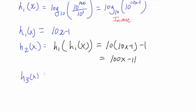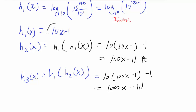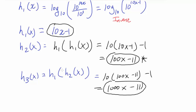Now let's find h₃(x) = h₁(h₂(x)). We plug 100x − 11 into 10x − 1, giving 10(100x − 11) − 1 = 1000x − 110 − 1 = 1000x − 111. So we're seeing a pattern: h₁(x) = 10x − 1, h₂(x) = 100x − 11, h₃(x) = 1000x − 111.